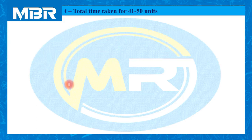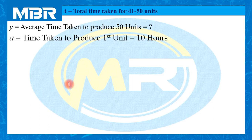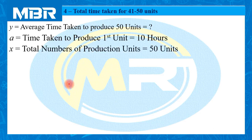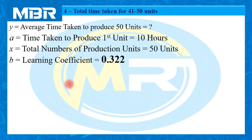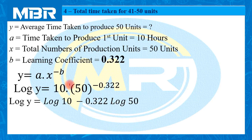Let us calculate total time for 50 units. Y is the average time taken to produce 50 units. A, the time taken to produce the first unit, is 10 hours, ready-made given. X, total number of production units, is 50. And learning coefficient B is 0.322, as given in the question. Inserting into the formula: y equals A multiplied by x raised to minus B, so y equals 10 multiplied by 50 raised to minus 0.322.